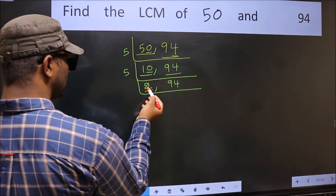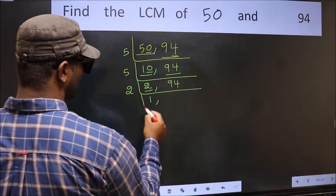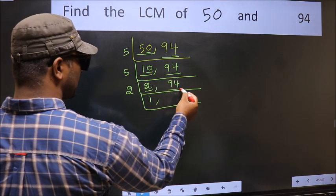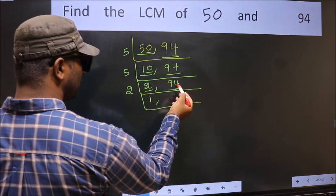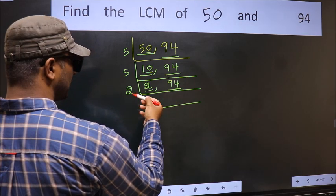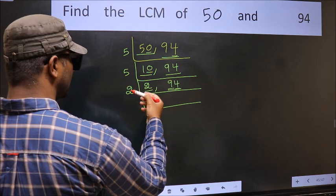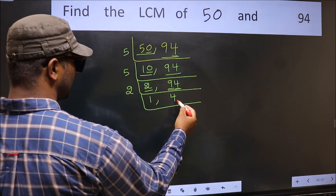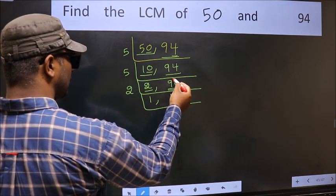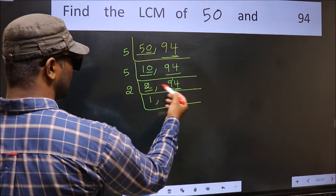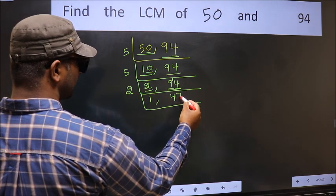Now here we have 2, 2 is the prime number so 2×1 is 2. The other number 94, last digit 4 even so this is divisible by 2. First number 9, a number close to 9 in 2 table is 2×4 is 8. 9 minus 8, 1 carried forward 14. When do we get 14 in 2 table? 2×7 is 14.